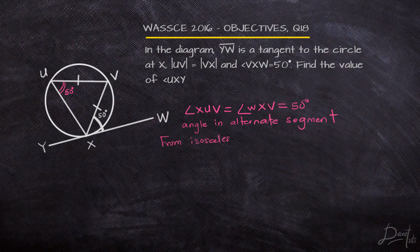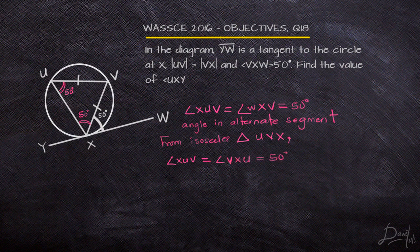Since angle WXV is 50 degrees already, and the two sides UV and UX of the triangle are equal, that makes it an isosceles triangle. We know that base angles of an isosceles triangle are always equal, so since the two sides are equal, the base angles are also going to be equal. Therefore, angle VXU is also going to equal angle XUV, and that is also 50 degrees.